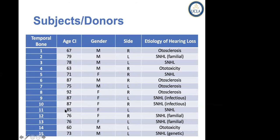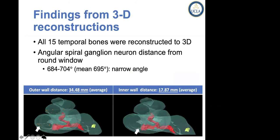The demographics of the patients included 15 specimens with age ranging from 60 to 92, and the distribution of male and female is almost equal. To summarize, what we found is that in humans the spiral ganglion neurons are extending from 684 to 704 degrees. The mean is approximately 700 degrees, and as you can tell from the data, the angle range is pretty narrow, meaning it's a pretty consistent finding.